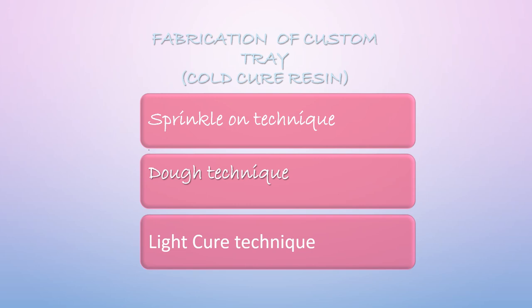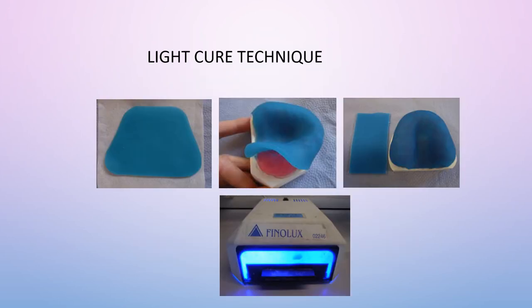For fabricating the custom tray with cold cure resin, there are three techniques: the sprinkle-on technique, where polymer powder and monomer liquid are alternately dispensed to build up the tray; the dough technique, where polymer and monomer are mixed in a 3:1 ratio to form a putty-like consistency that is adapted on the cast; and the light cure technique, where preformed light cure sheets are adapted on the primary cast, excess material is cut out, and it is placed in the light curing machine for at least 10 minutes per the manufacturer's instructions.